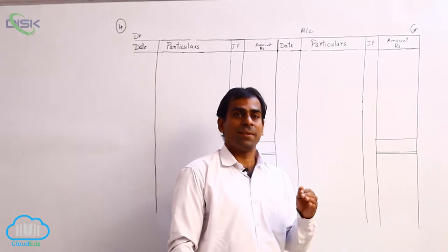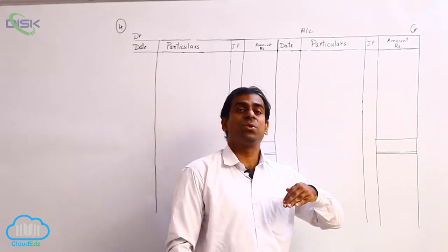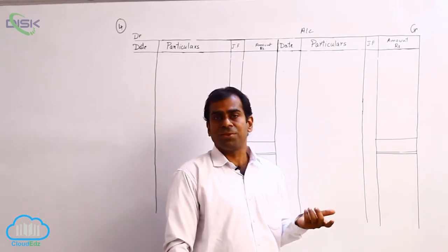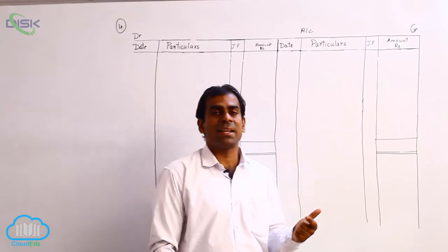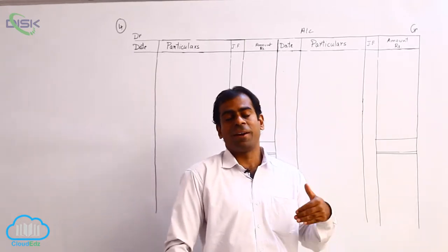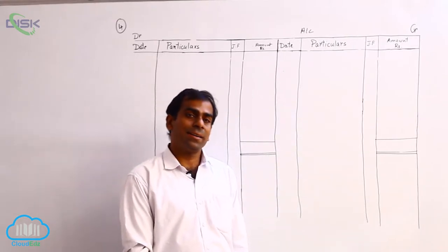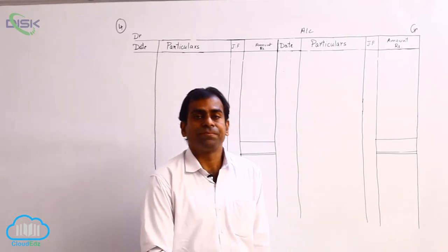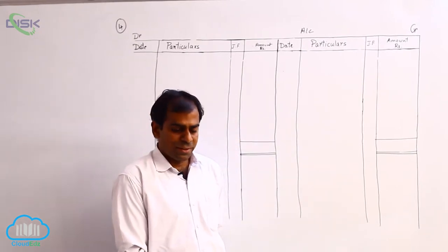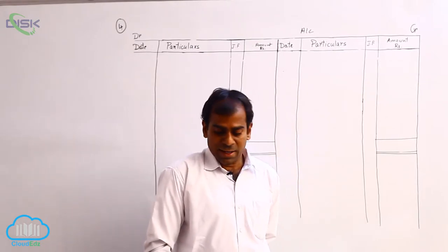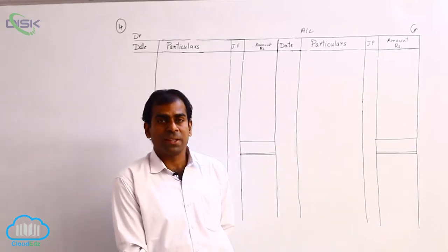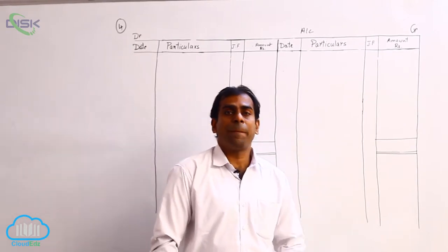As discussed earlier, whenever the business is due to someone, that means the business has to pay them money. Why should the business pay them money? Probably because the business has purchased goods from them — they are our suppliers, or indirectly, they are our creditors. The transactions are related to the month of January. The first transaction is an opening balance: on 2nd January, amount due to Swami is 12,000, meaning we have to pay Swami.